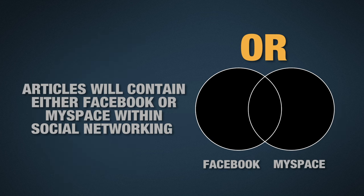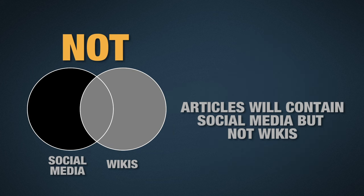OR allows you to search two or more similar terms together. For example, social networking and Facebook or MySpace. NOT allows you to exclude a term from your search. For example, social media not wikis.